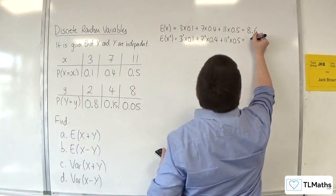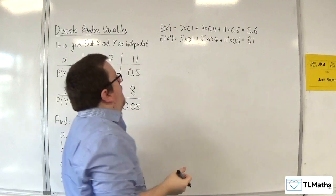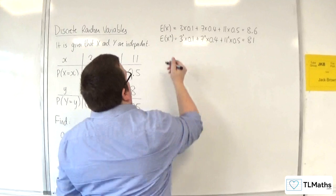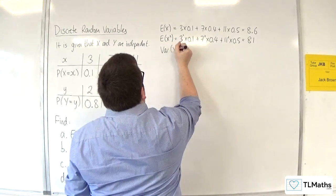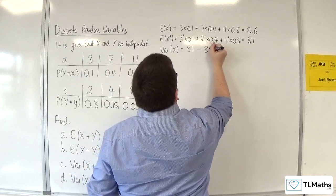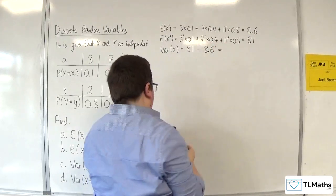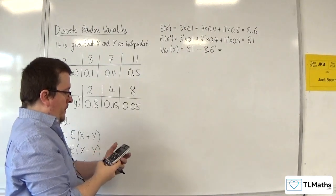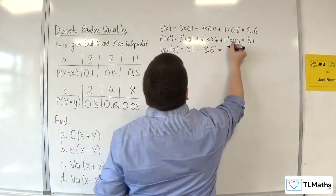So then Var of X is equal to 81 take away 8.6 squared. And that gets us 7.4.